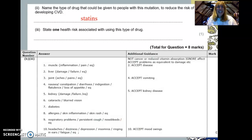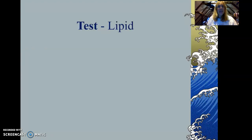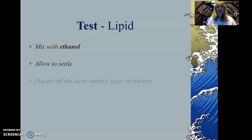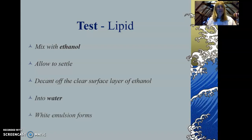Recall the emulsion test for lipids from key stage four: mix the sample with ethanol (alcohol), allow it to settle, then decant off the clear surface layer of ethanol. You should see an emulsion — a milky solid forming in the water — which indicates a lipid is present. Alternatively, wipe the sample on filter paper; an oily spot is another indication that a lipid is present. For example, a peanut (if you're not allergic) will leave that oily mark behind.